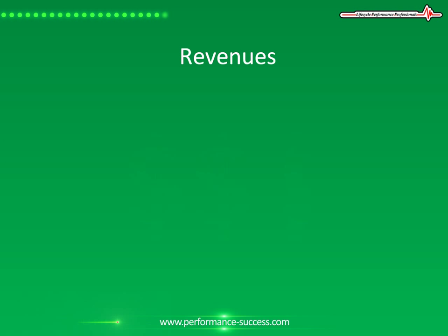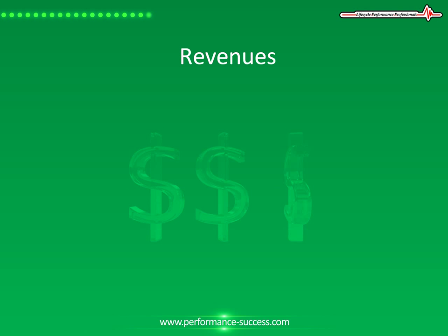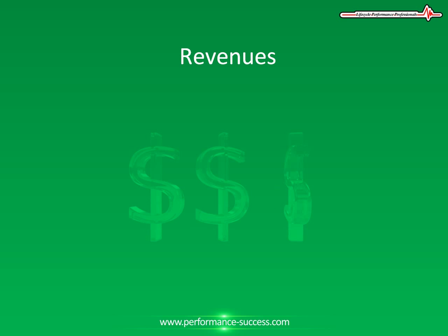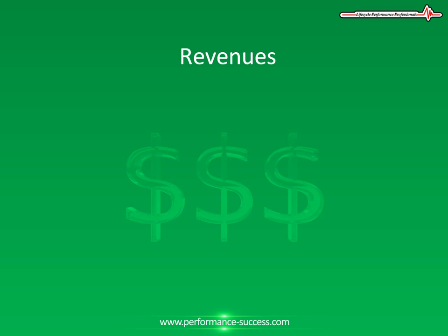Revenues represent proceeds from the sale of goods and services produced or offered by a company. You will see revenues represented on the income statement as revenues, sales, net sales, or net revenues. We will explain what is being netted out of net revenues shortly. Revenues are referred to colloquially as a company's top line because they appear at the top of the income statement.